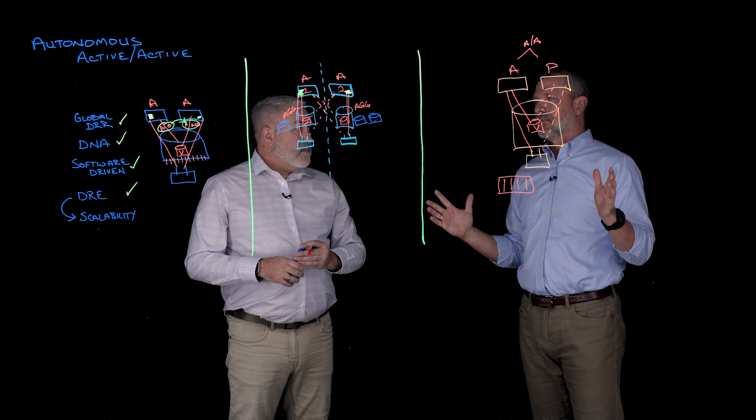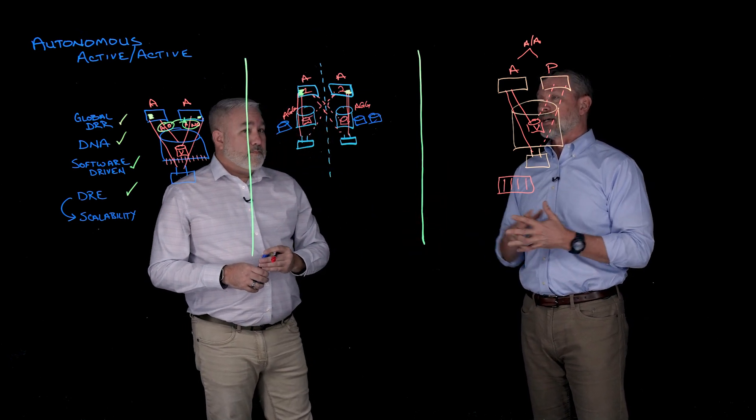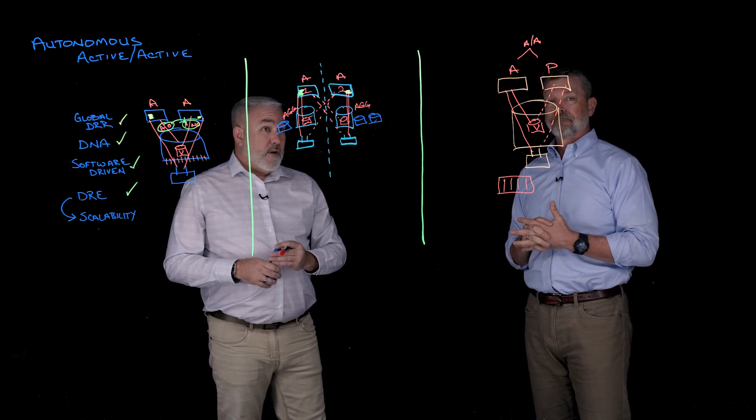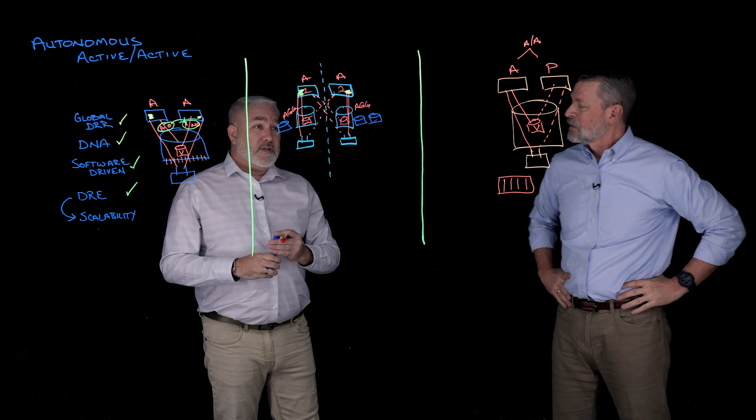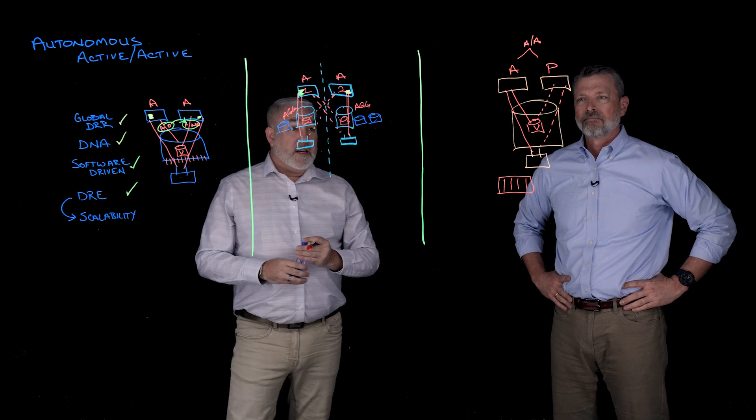So this has been great. The point being, architecture does matter. And the autonomous active-active comes with multiple benefits on the PowerStore side. That's exactly right. It's all about driving simplicity, it's all about driving efficiency, and it's all about driving cost effectiveness in the architecture.